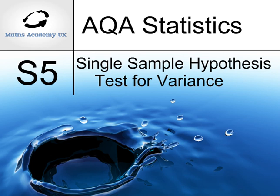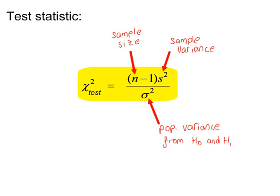A single sample hypothesis test for the population variance. This is the formula for the test statistic. It's in the formula book on page 12.